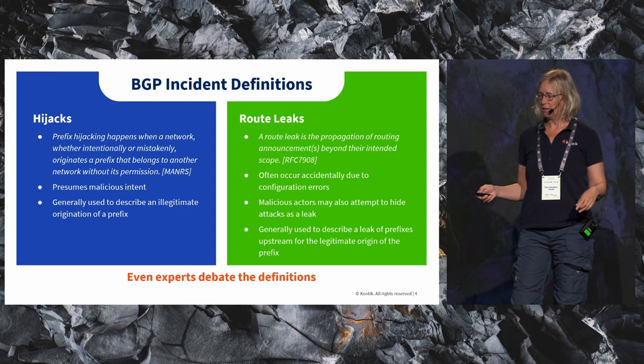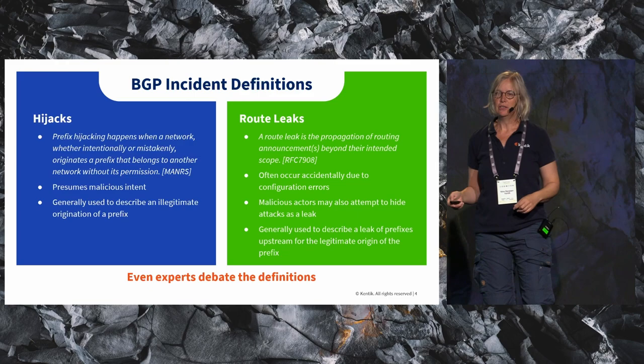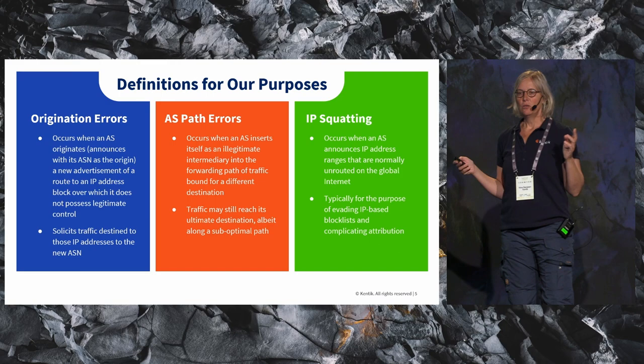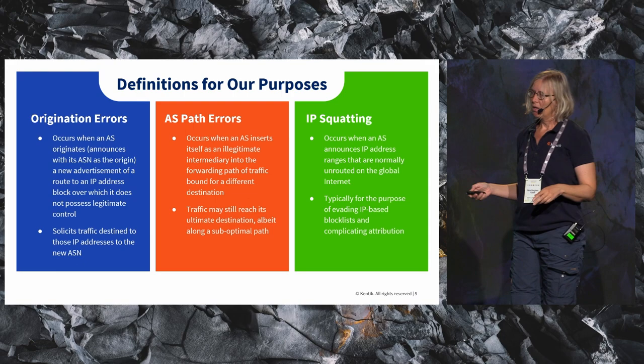These are the overall broad definitions you can find if you Google them. But for this presentation, we're going to be talking about three different definitions we will be focusing on. One is origination errors — basically, you have some IP space, and it is originating somewhere else where it should be. And what happens then? Well, traffic goes to the wrong destination.